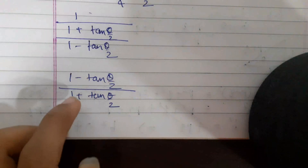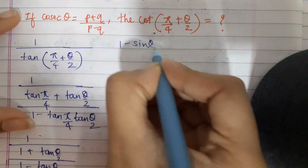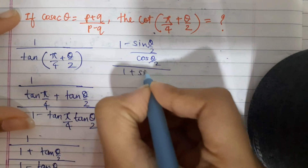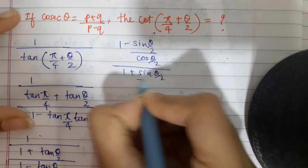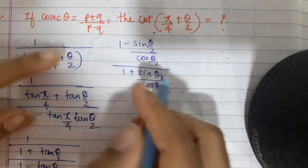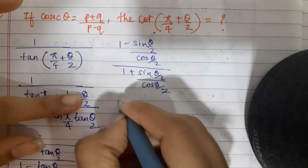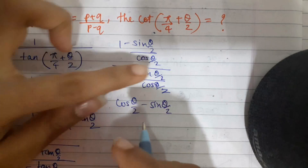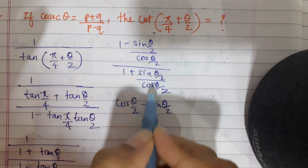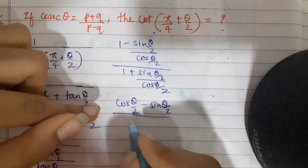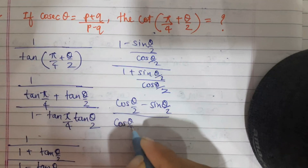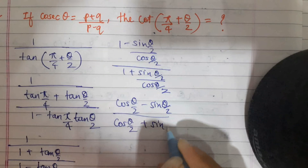Now we write tan in the form of sin and cos, giving us [1 - sin(θ/2)/cos(θ/2)] / [1 + sin(θ/2)/cos(θ/2)]. Taking the LCM, this becomes (cos(θ/2) - sin(θ/2)) in the numerator, and since cos(θ/2) is common in the denominator it gets cancelled, leaving (cos(θ/2) + sin(θ/2)) in the denominator.